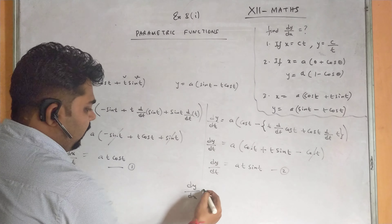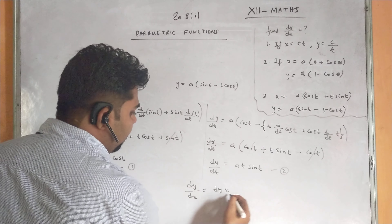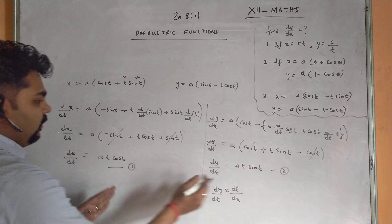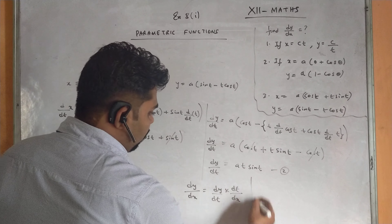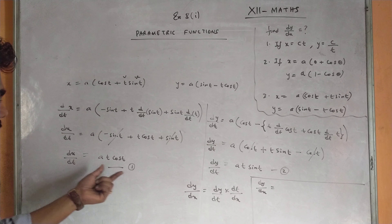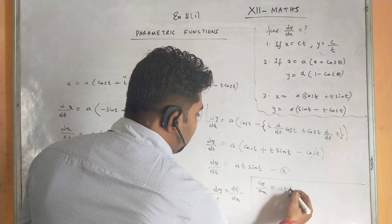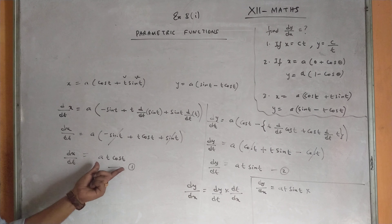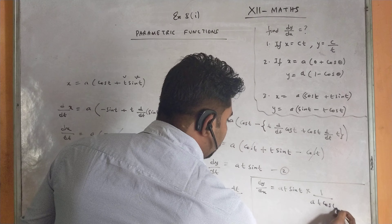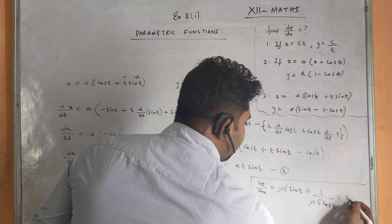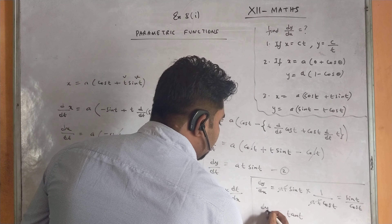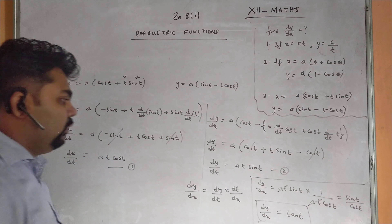Finding dy/dx: dy/dx = (dy/dt)·(dt/dx). We have dy/dt = a·t·sin t and dx/dt = a·t·cos t, so dt/dx = 1/(a·t·cos t). Therefore dy/dx = (a·t·sin t)·(1/(a·t·cos t)). The a·t and a·t cancel, leaving sin t / cos t = tan t. So dy/dx = tan t.